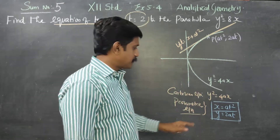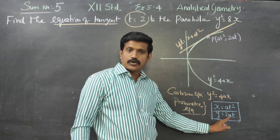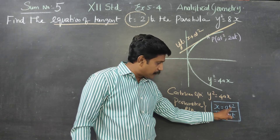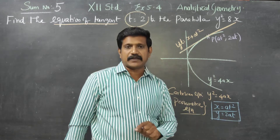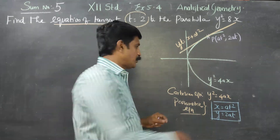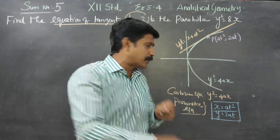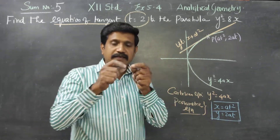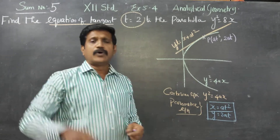In parametric form, x is equal to at square, y is equal to 2at. Here t is the parameter — t is the link between x and y, connecting them together.